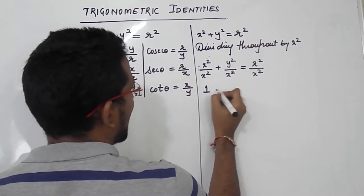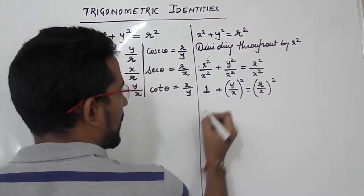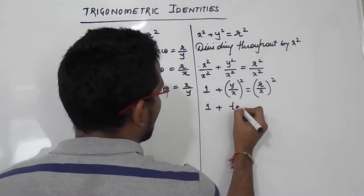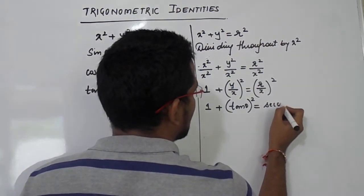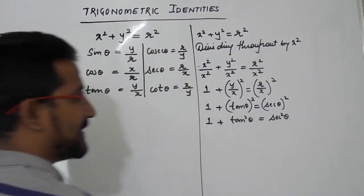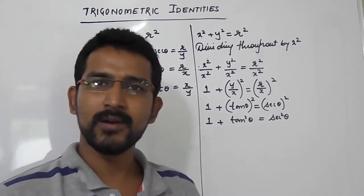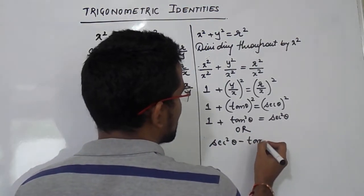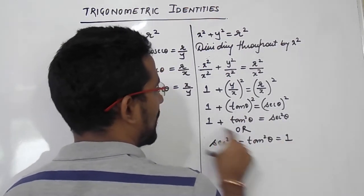The x²/x² cancels to give 1, so we get 1 + (y/x)² = (r/x)². Now, y/x is nothing but tan θ, and r/x is nothing but sec θ. So we get 1 + tan²θ = sec²θ. We can also write this as sec²θ − tan²θ = 1. So this is another important identity.